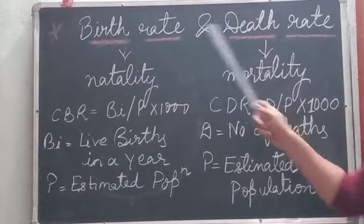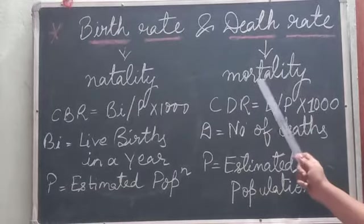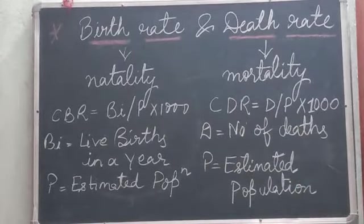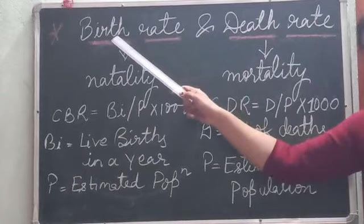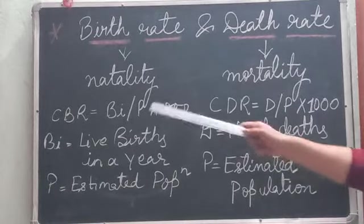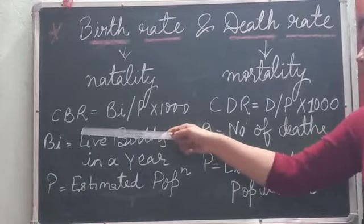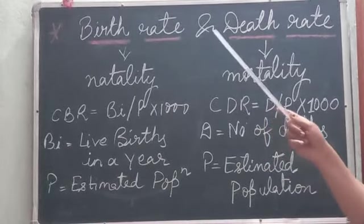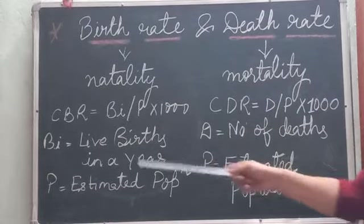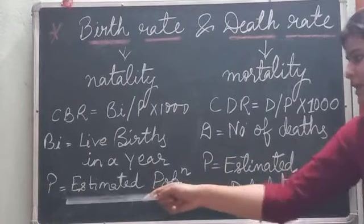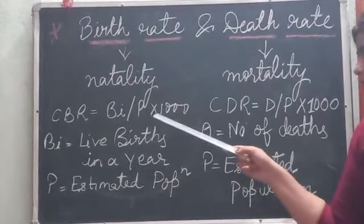The next topic is birth rate and death rate. Birth rate is also called natality rate, and death rate is also called mortality rate. The rate at which births take place is the birth rate or natality rate. The Crude Birth Rate (CBR) is generally expressed as the number of births per thousand. CBR = BI / P × 1000, where BI indicates live births in a year and P indicates the estimated population at mid-year.